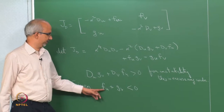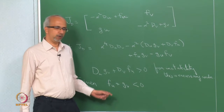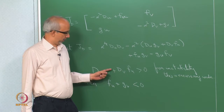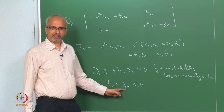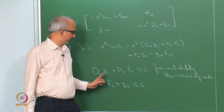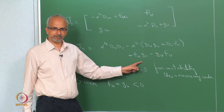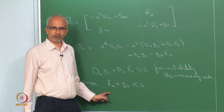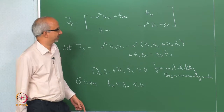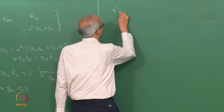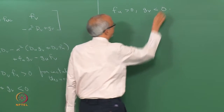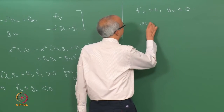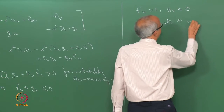What we already know is that fu plus gv is less than zero. So in order to possibly have an instability, there are two options: one is that both fu and gv are negative — if both are negative then this sum is always going to be negative and you will not have a violation. The only option available is that one of them is positive and the other is negative, with the negative one dominating the positive one.